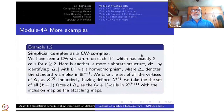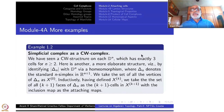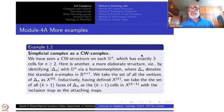Last time we introduced the notion of relative CW complexes and CW complexes, and checked a lot of examples — standard examples such as spheres, disks, and then later on projective spaces, both real and complex.